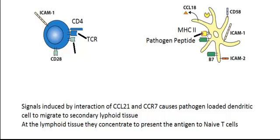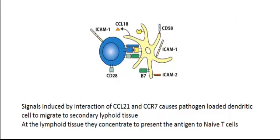CD28 needs to bind to the B7 family of proteins, which are the co-stimulators. So activation of a T cell requires MHC class II protein with the antigen, plus B7, which binds to CD28. Binding of the dendritic cell to the naïve T cell leads to T cell activation. Additionally, dendritic cells produce a chemokine called CCL18, which specifically attracts naïve T cells to the dendritic cells.